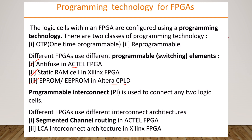The programmable interconnect is essentially a programmable wire used to connect between any two logic cells. The programmable interconnects are always used to make connections between two programmable logic cells. We have different kinds of interconnecting architectures, such as segmented channel routing as well as LCA interconnect architecture, which we will study in the fourth unit.